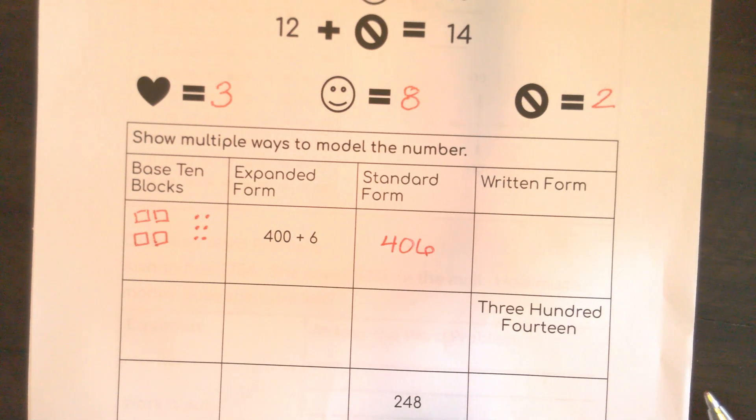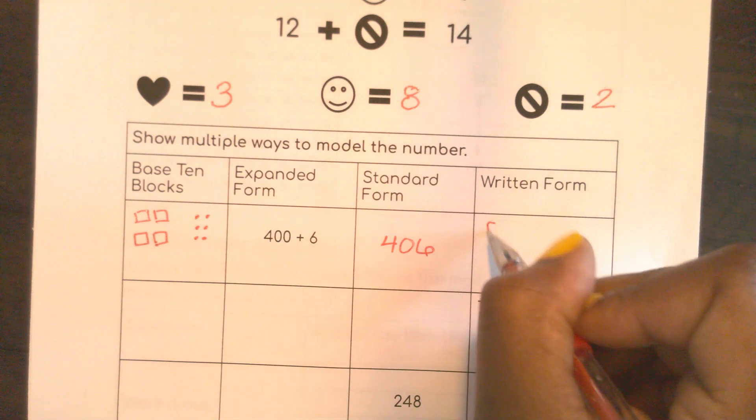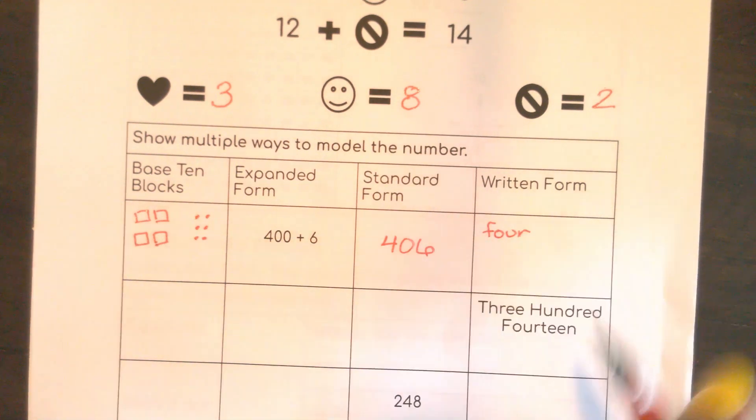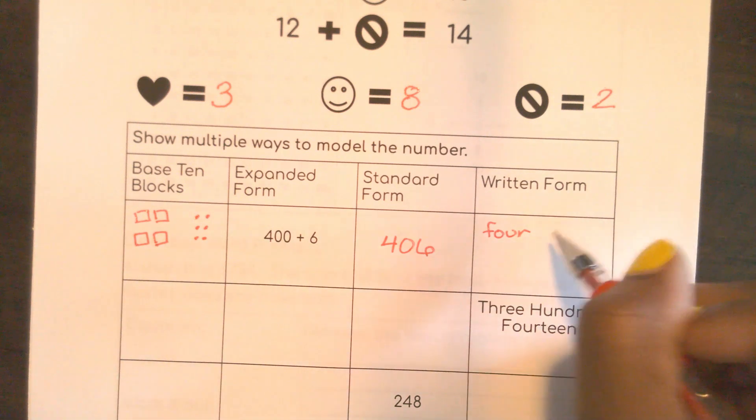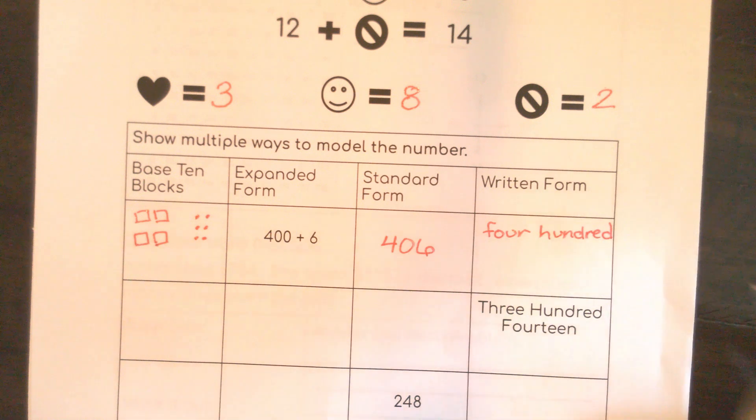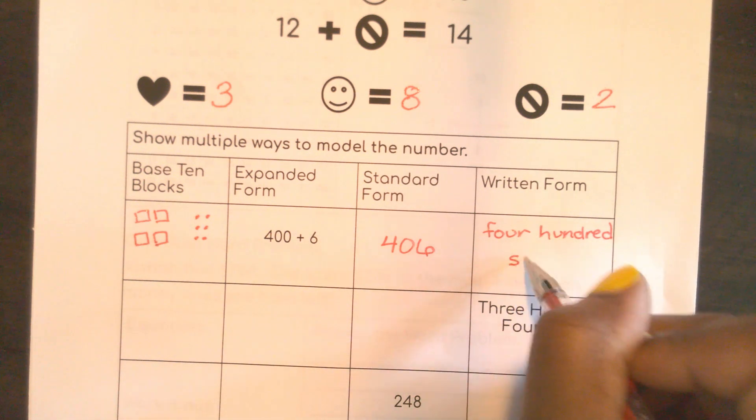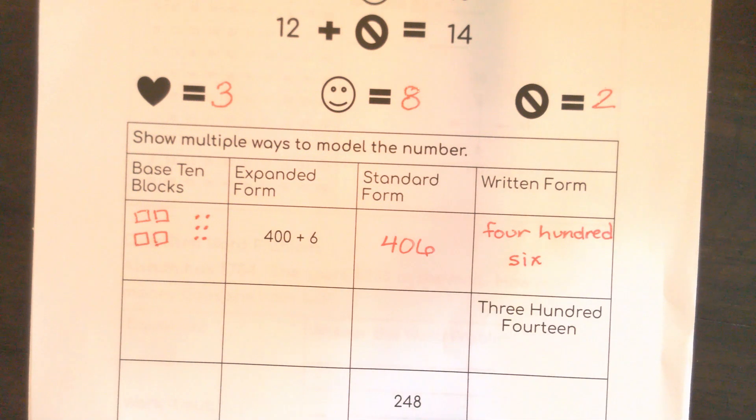Now, written form, there's no word bank. For all that practice we did with name that number, let's put it into action. Four hundred, six. You had to know that one.